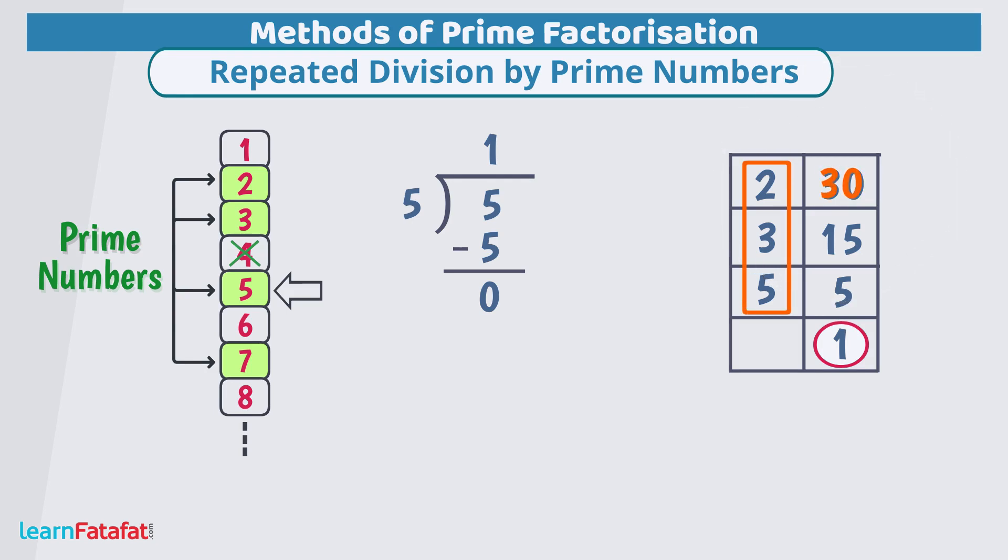Let's write 30 in the form of product of prime factors. 30 equals to 2 multiplied by 3 multiplied by 5.